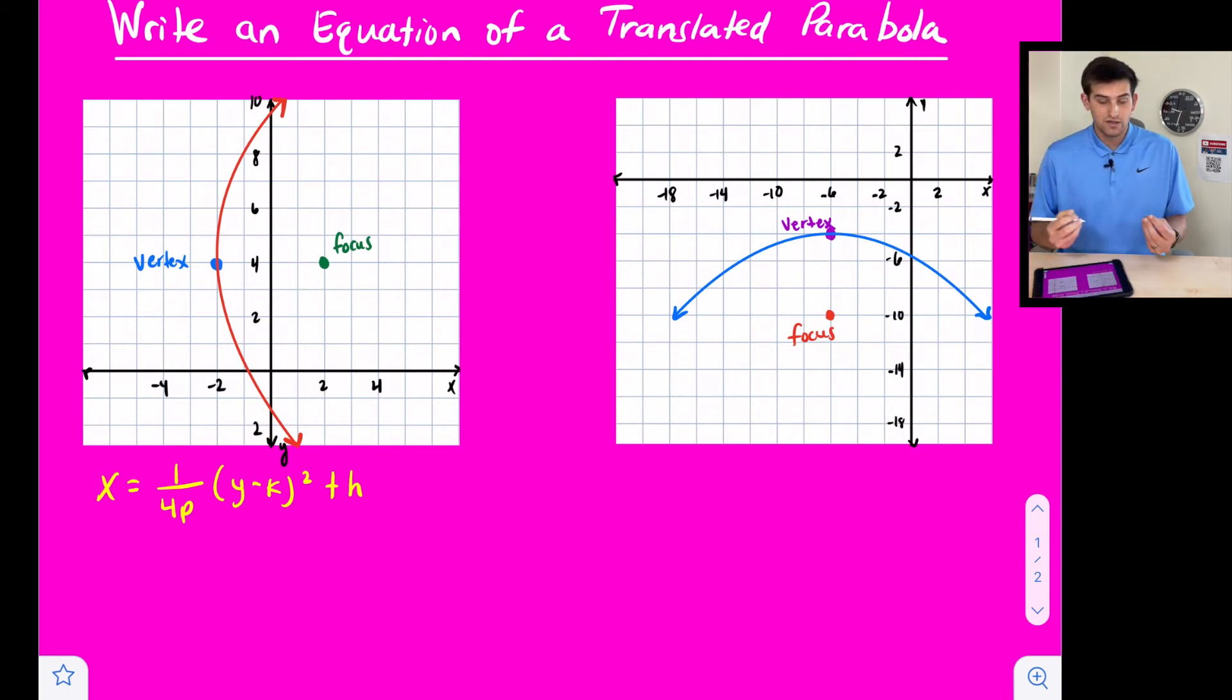Now we can use our focus to plug in our value for P and use our vertex to plug in our values for K and H. We'll say X equals 1 over 4, and for our focus, we see we are 1, 2, 3, 4 units away, so we can multiply by 4 right there. We're going to write this as Y minus, and K is our value that is going up. Our vertex has a Y value of 4, so we're going to say Y minus 4 quantity squared. For H, that is our value going left or right, and since we went left 2, we're going to write minus 2.